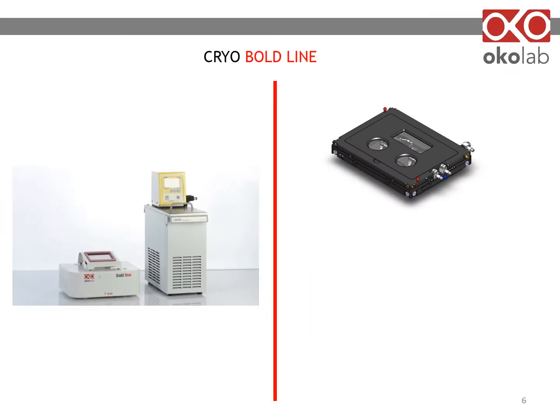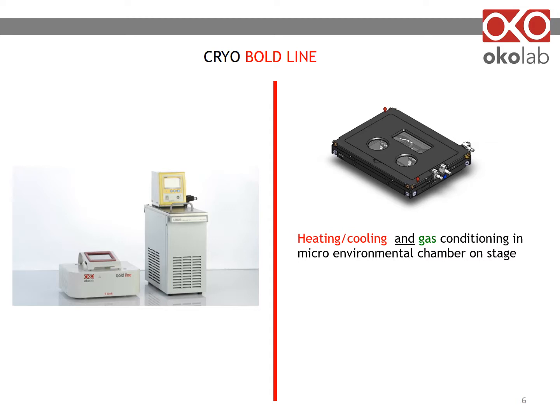Connect the items on the left to a stage top chamber. This is a water jacket with sealed channels through which liquid of the appropriate temperature flows. The chamber is easily removed. If you use an oil immersion or other immersion objective, you need an objective heater cooler.